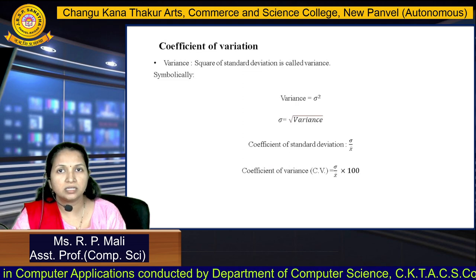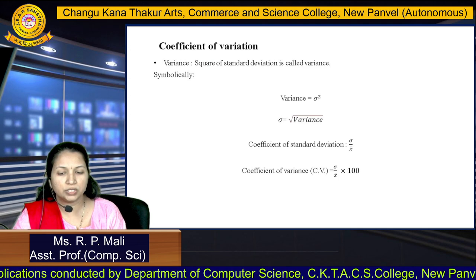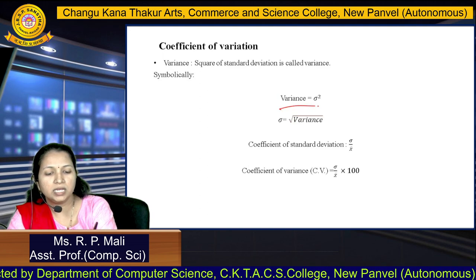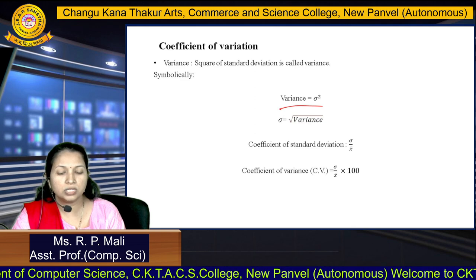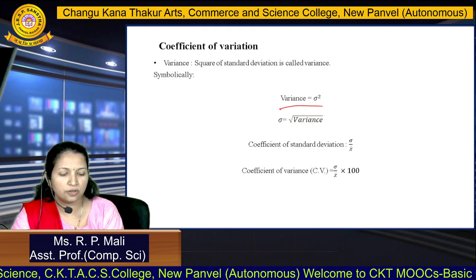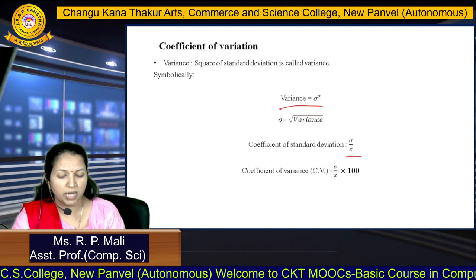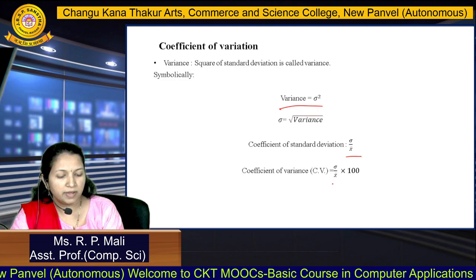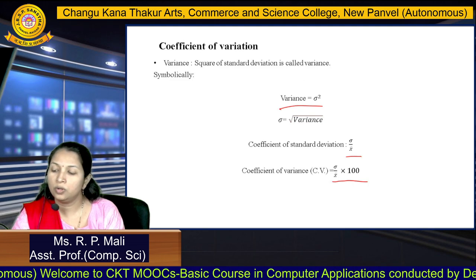Variance is the square of the standard deviation, so variance = σ². Therefore σ = √variance. The coefficient of standard deviation is σ/X̄, and the coefficient of variation (CV) = (σ/X̄) × 100.